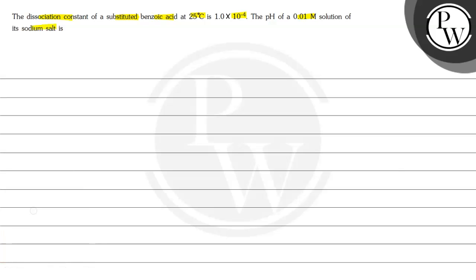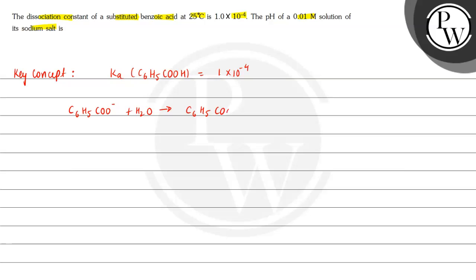We will start the solution and first identify the concept involved. The value of dissociation constant Ka for benzoic acid C6H5COOH is given as 1 × 10⁻⁴. We have to find the pH for C6H5COO⁻ sodium salt. The hydrolysis equation is: C6H5COO⁻ + H2O → C6H5COOH + OH⁻. The initial concentration is 0.01 molar.